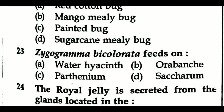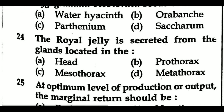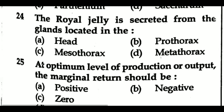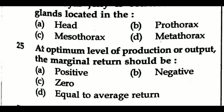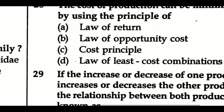Question 23: Gyrogramma bicolorata feeds on — Option A: water hyacinth, Option B: Parthenium. Question 24: Royal jelly is secreted from the glands located in the — Option A: head, Option B: prothorax, Option C: mesothorax, Option D: metathorax. Question 25: At optimum level of production, the marginal return should be — Option A: positive, Option B: negative, Option C: zero, Option D: equal to average return.